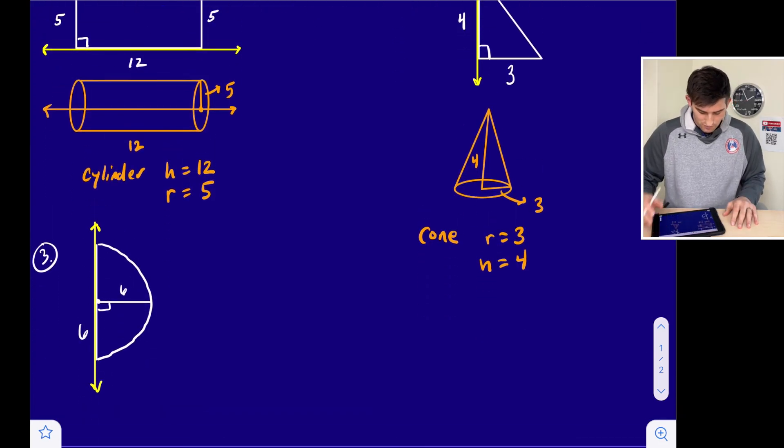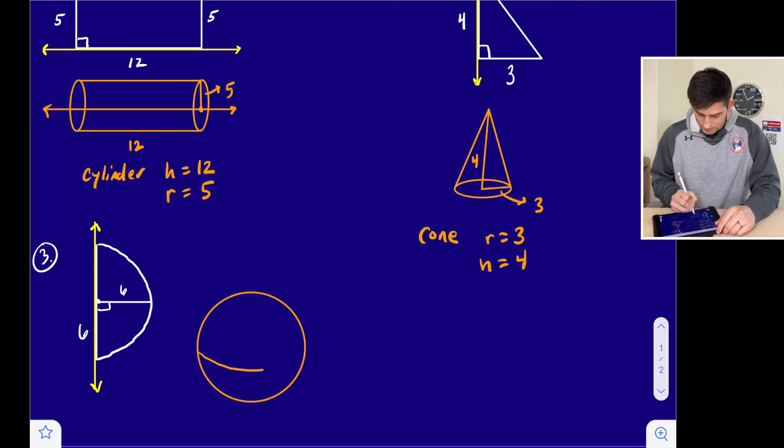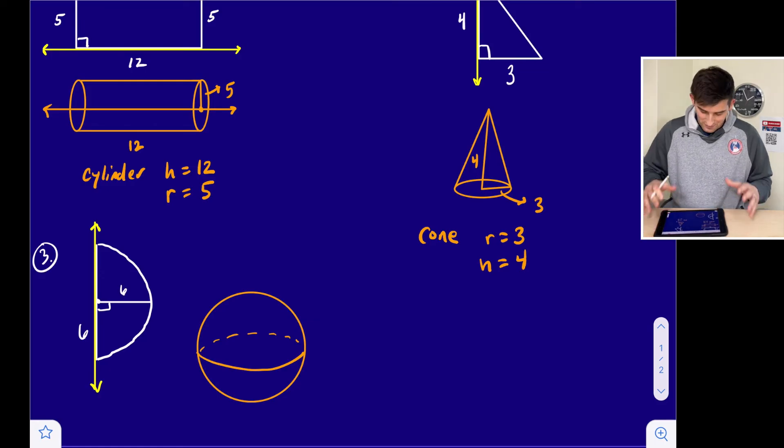And the last example, number three, we have a semi-circle here, and we're going to rotate it around this axis. So once we do this, this is going to give us a sphere. So I will do my best to draw a sphere here. I know it's a little bit challenging trying to do it on a two-dimensional iPad here, but that'll be okay.